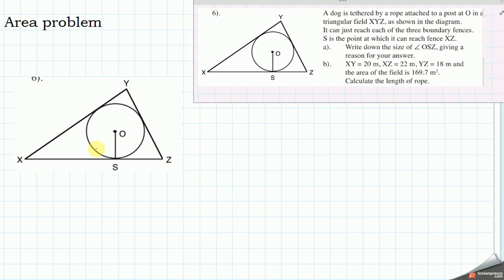So X is the point which it can reach the point XZ. So we now need to write down the size of angle O to X to Z. So the angle they're talking about is this one in here. And we have a radius at a point to a tangent.